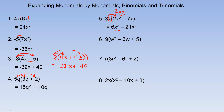For number 6, the 9 is distributed into the brackets. 9 times w squared is 9w squared. Then 9 times negative 3w: 9 times negative 3 is negative 27, so it's negative 27w. And 9 times 5 on the end is 45, so plus 45.